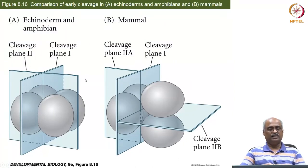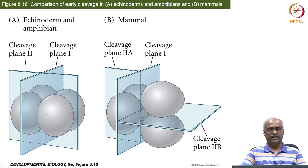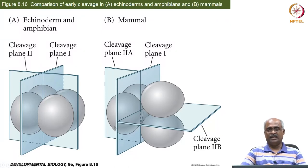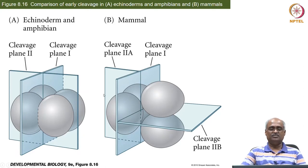This slide shows rotational cleavage. In amphibians, both the first and second divisions occur longitudinally. In mammals, the first cleavage is similarly meridional, but for the second cleavage one blastomere undergoes meridional cleavage while the other undergoes equatorial cleavage. This is what we call rotational cleavage — the first is meridional, then one blastomere (2A) is meridional while the other is equatorial.